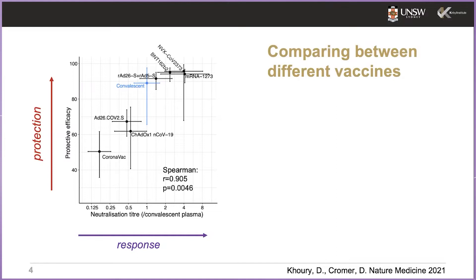Going back nearly 18 months now, as the results of the phase 3 clinical trials were coming out for the different vaccines, we were interested to observe that if you looked at the immunogenicity in terms of the neutralizing antibody response from the phase 2 trials on the x-axis, normalized to the convalescent subjects included in each of those trials, and you looked at the clinical protection from symptomatic infection reported in the phase 3 trials, you saw this very strong correlation.